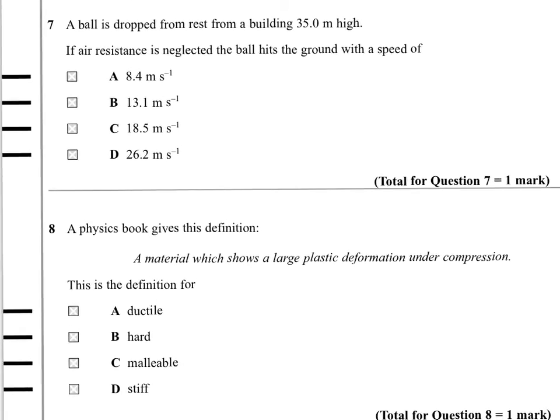A ball is dropped from rest from a building 35 meters high. If air resistance is neglected, the ball hits the ground with which speed? We need an equation that has displacement and velocities that doesn't require us to know the time. The one that fits the bill is V squared equals U squared plus 2AS because it doesn't have T in it.